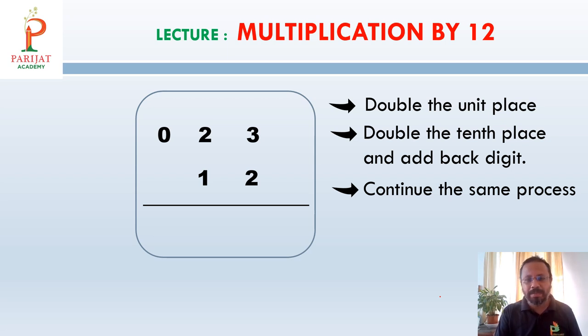First we will go with the first step. Double the unit place. So double of unit place 3 is 6. Then double the tenth place and add back digit. So here tenth place is 2. So we have to double 2, which is 4, and back digit is 3. So 4 plus 3. 4 plus 3 is 7 and 0 plus 2 is 2.